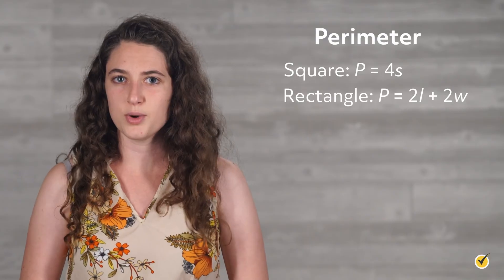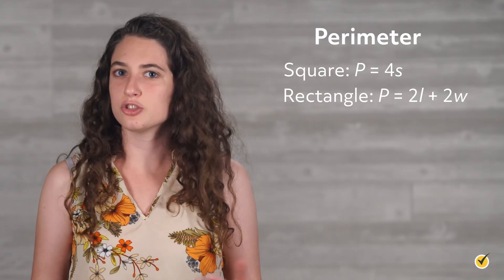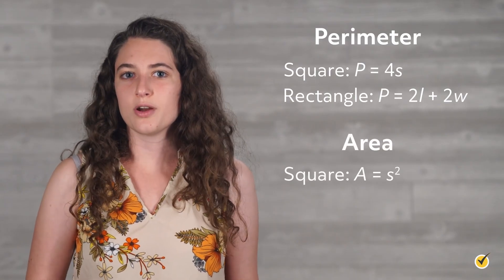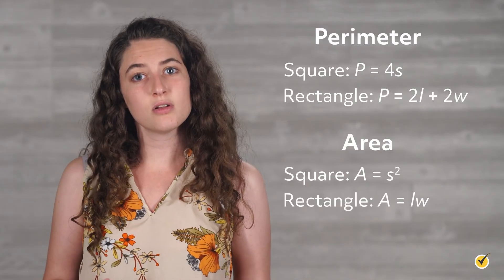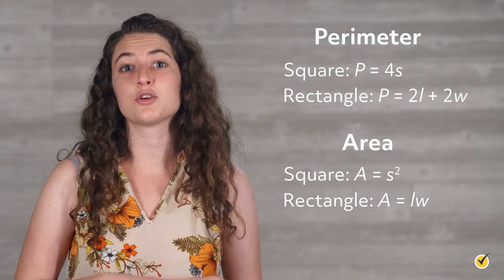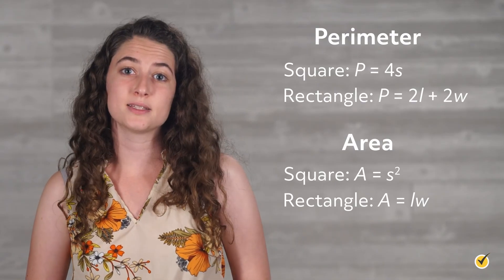In this lesson, we learned how to find the perimeter and area of squares and rectangles. The perimeter of a figure is the distance around it, measured in simple distance units like feet or meters. The perimeter of a square is 4 times the side length, and the perimeter of a rectangle is twice the length plus twice the width. The area of a figure is the size of the floor space inside it, measured in square units like square feet or square meters. The area of a square is the square of the side length, and the area of a rectangle is the length times the width. We can sum all of this up into four formulas that are well worth memorizing.